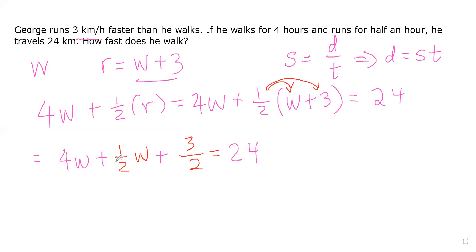We should combine like terms. Four w plus one half w is four and one half w, that's just nine over two w, and then plus three over two.